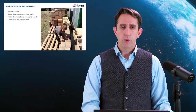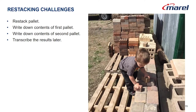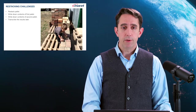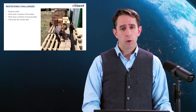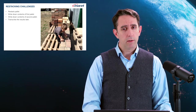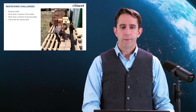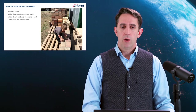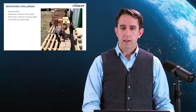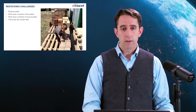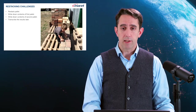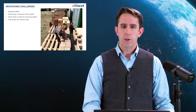Let's break the restacking pallets process down a little bit. We have a license plate for a full pallet, we make a new pallet, and we make a license plate for the new pallet. Do we make a license plate for the old pallet or do we forget? What if we make a new license plate and leave the old one there as well? Now we have three license plates. How can we tell which one is correct?